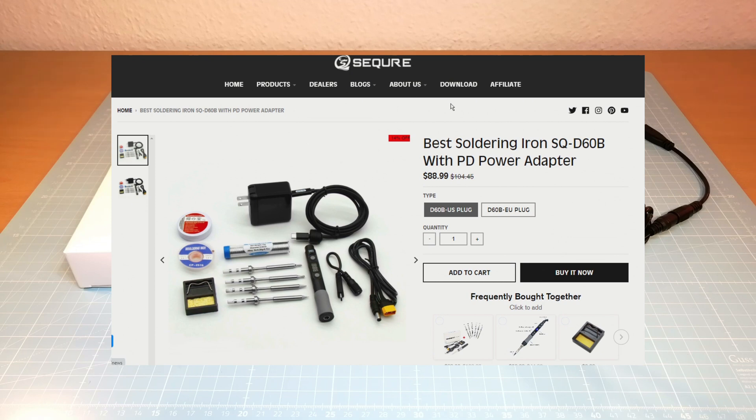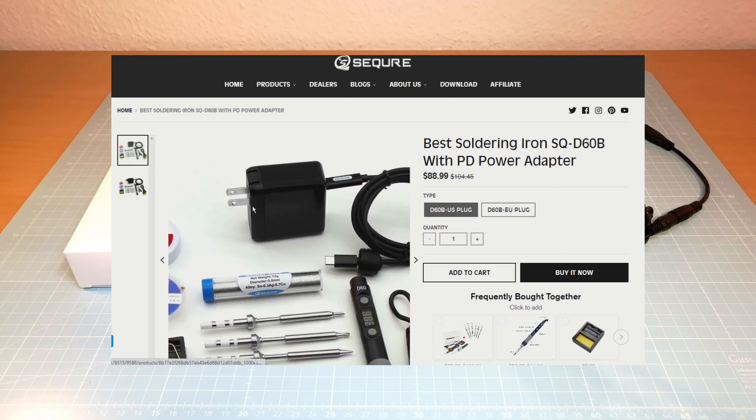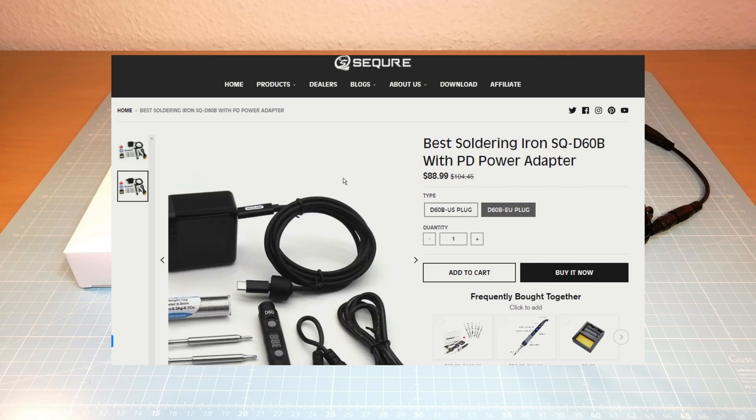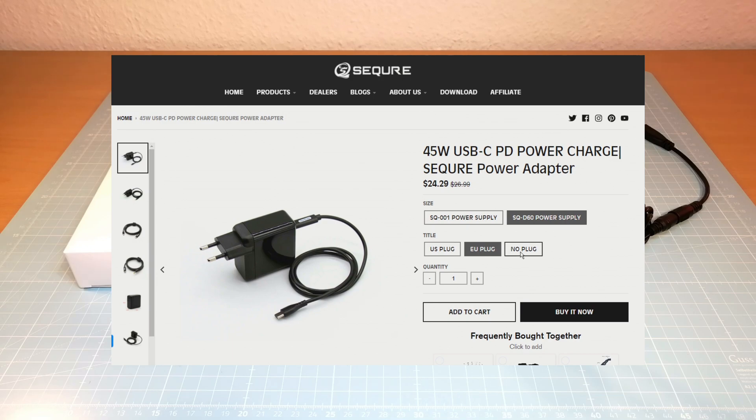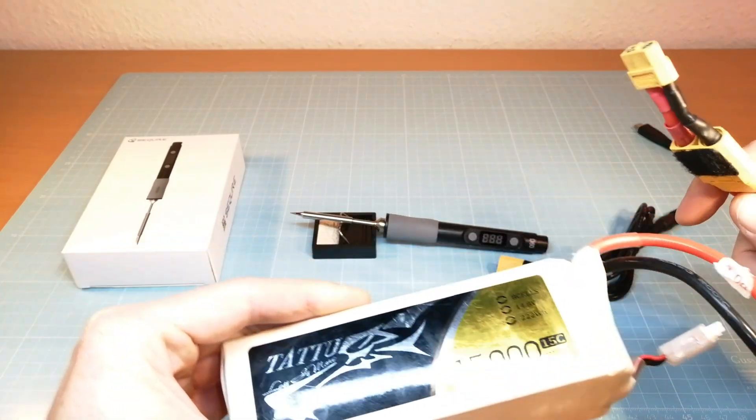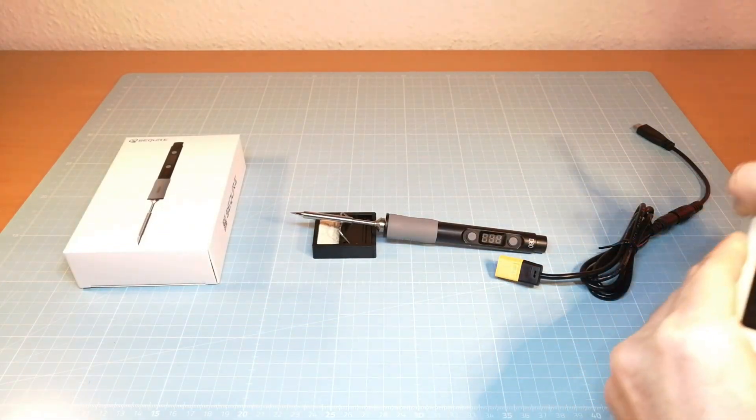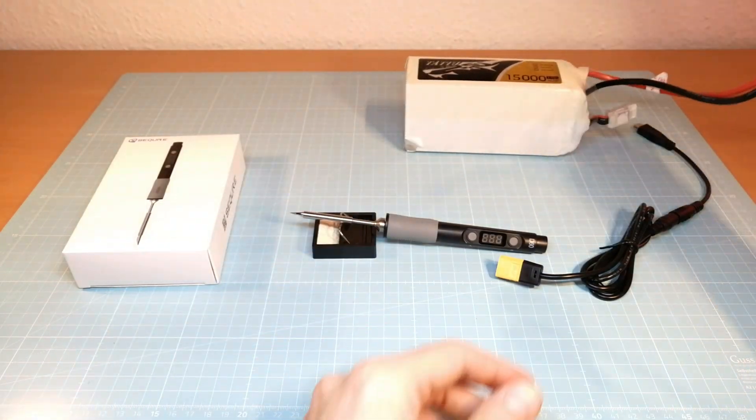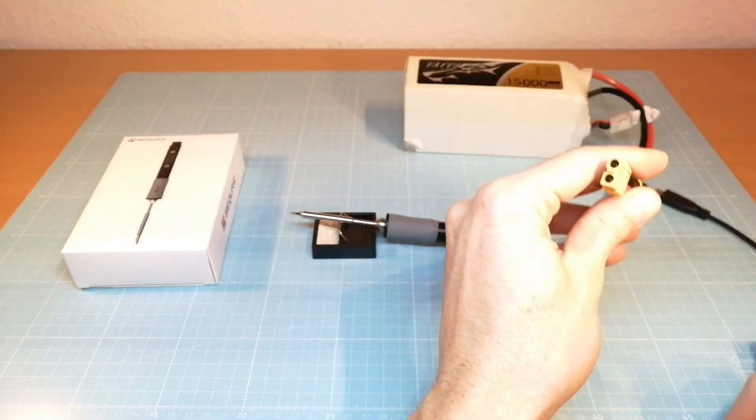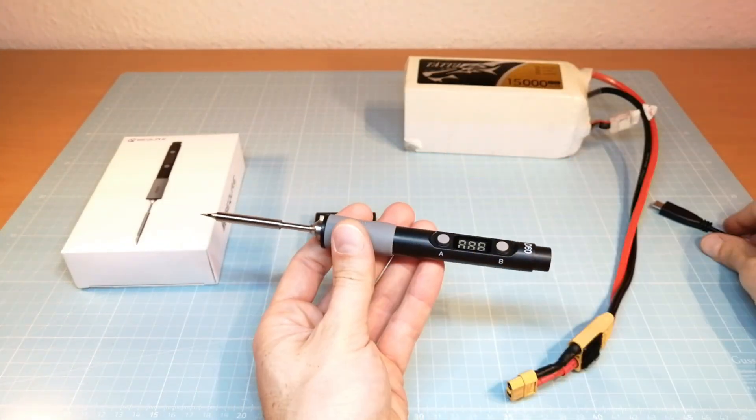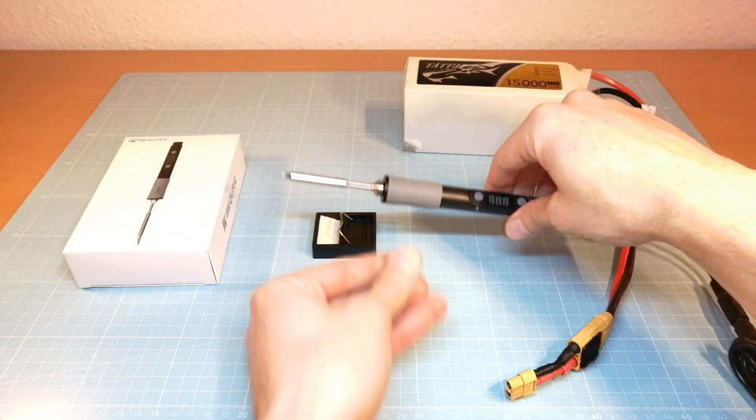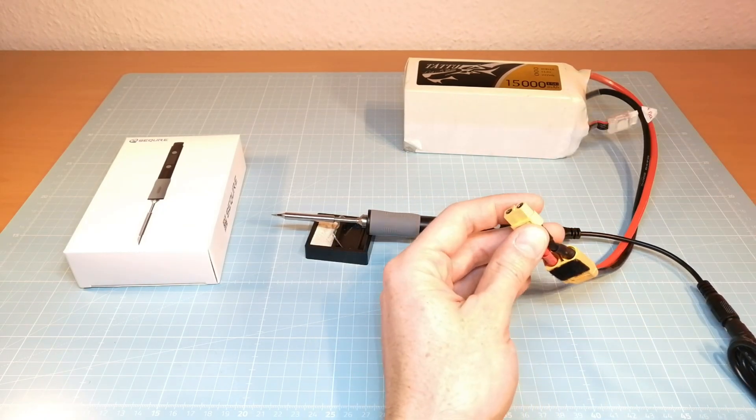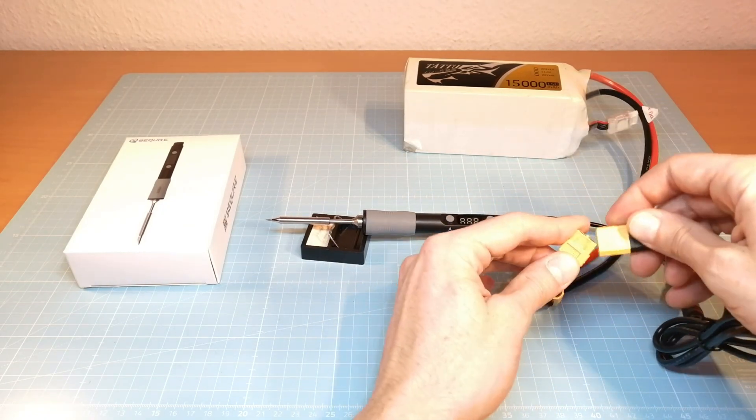But here you can even get the SQD60B with a PD power adapter with a US or EU plug. You can even buy it separately if you missed it while placing your order of the SQD60. I'm going to use a 4S battery with the XT60 connector for powering the SQD60B. And at this point you probably will notice that you can even use the SD60 as an out on the field repair soldering iron for your drones or RC cars, planes or whatever.